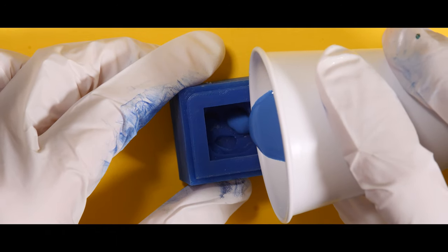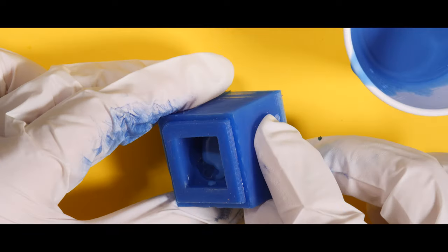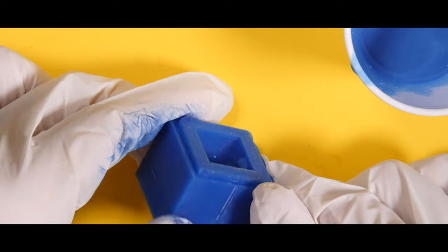Air bubbles tend to get trapped in the nooks and crannies of my mold, so I'm putting a little resin in and then tilting it around to try to mitigate the air bubbles that might form.